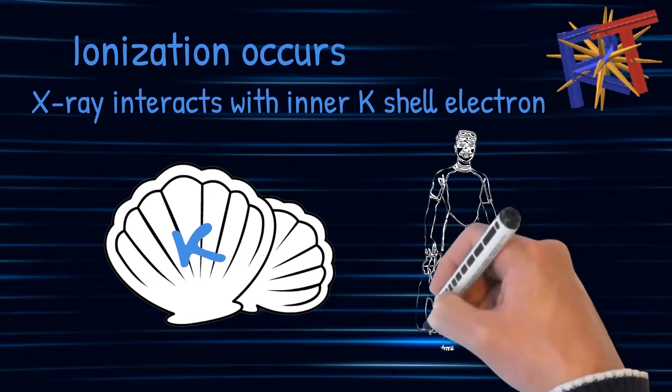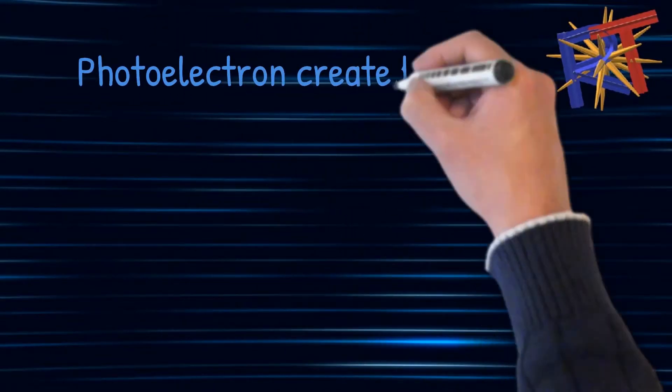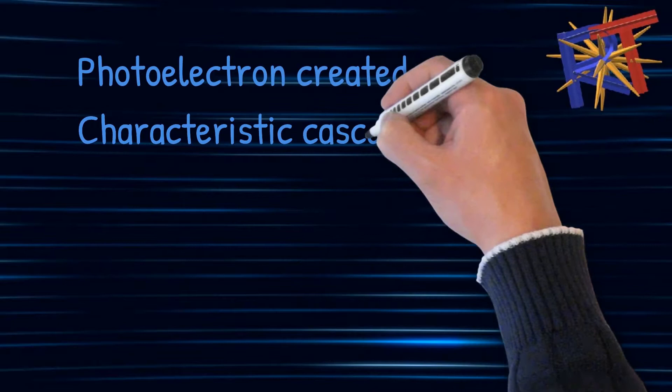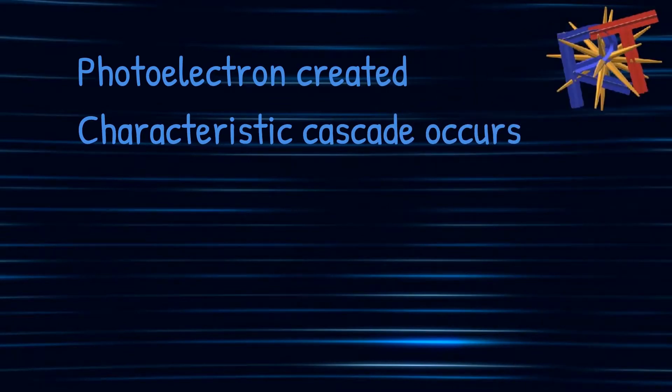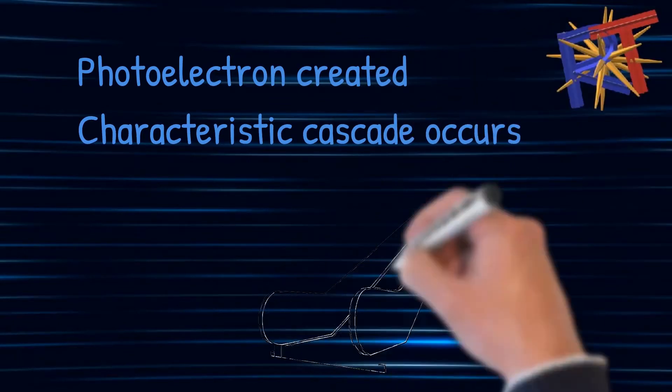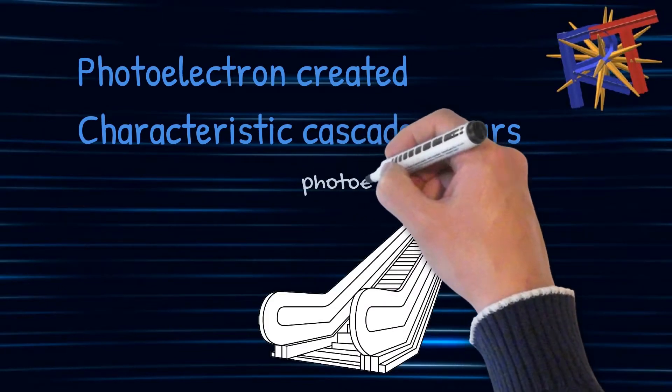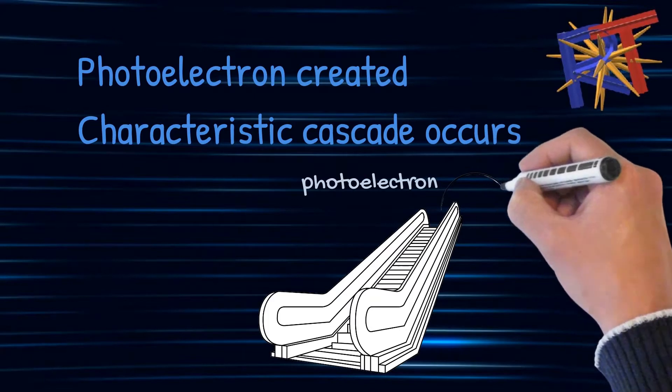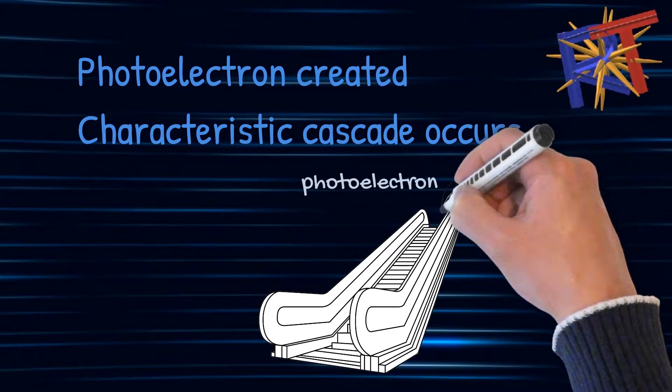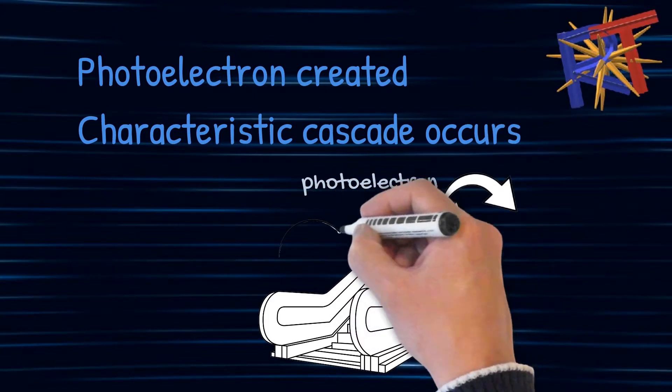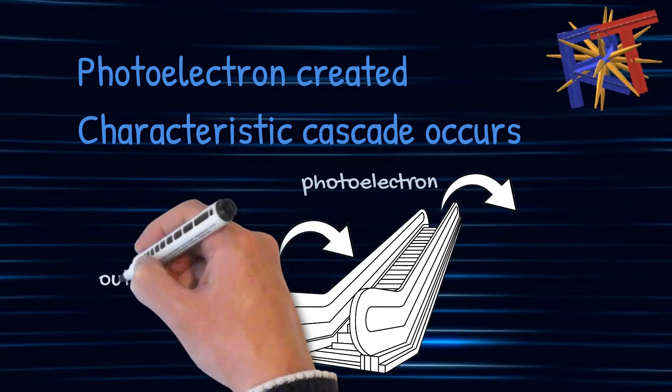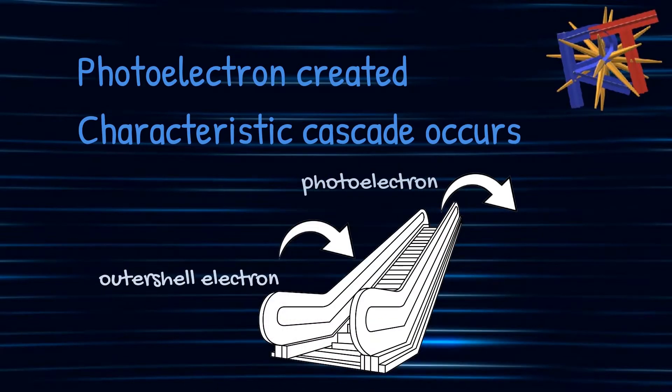In photoelectric effect, ionization occurs. The x-rays interact with the inner k-shell electron and a photoelectron is produced. That photoelectron will actually absorb all the energy from that x-ray minus the binding energy for that electron of that particular atom.